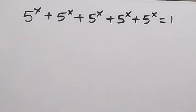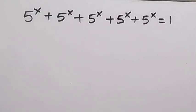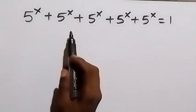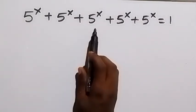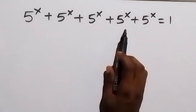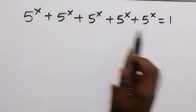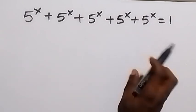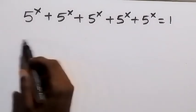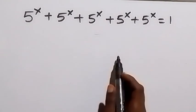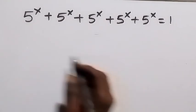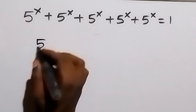Hello, you are welcome. How to solve this nice algebra problem: 5 raised to power x, plus 5 raised to power x, plus 5 raised to power x, plus 5 raised to power x, plus 5 raised to power x equals 1. Here we have 5 of these, so we can equally write this as 5 raised to power x times 5, then equals to 1.